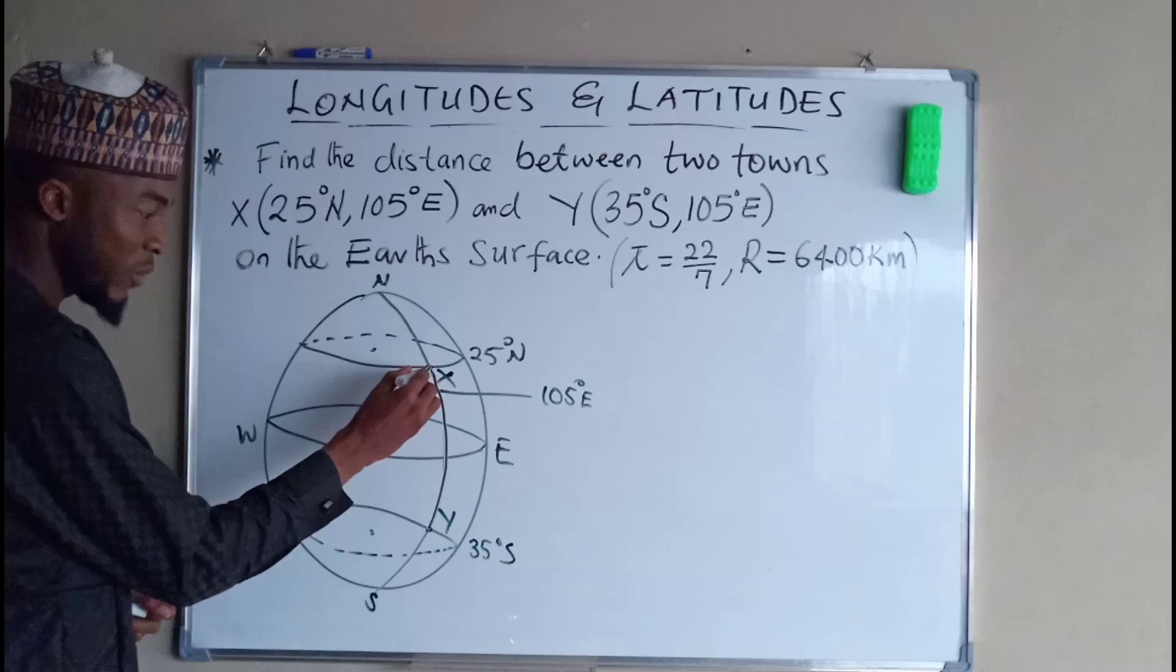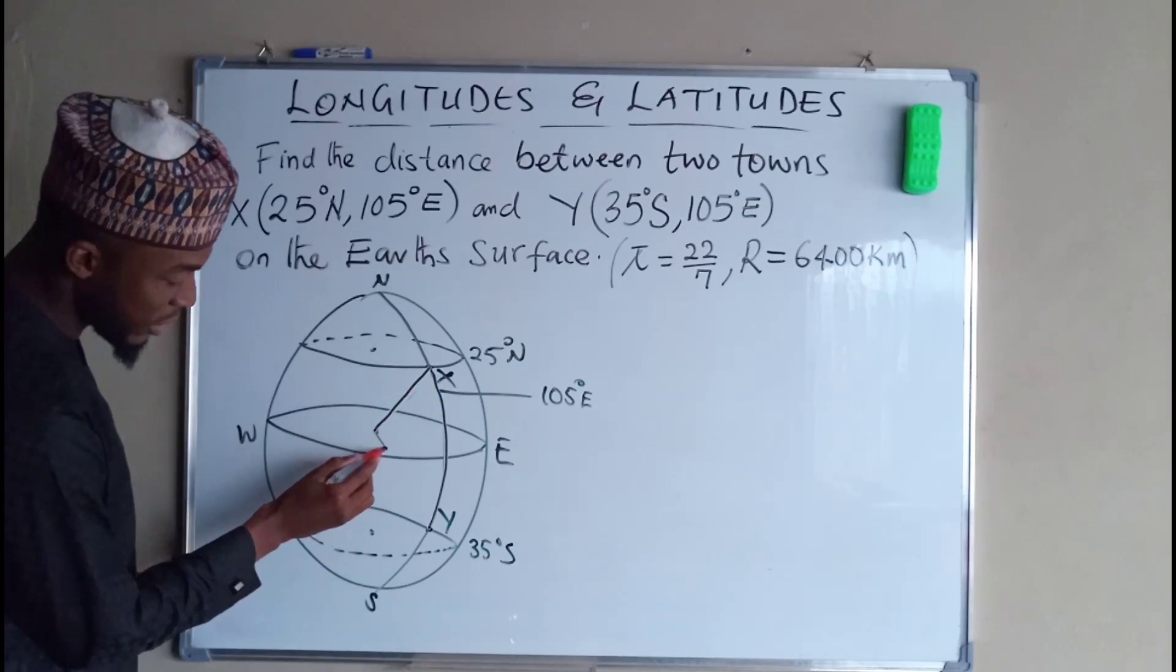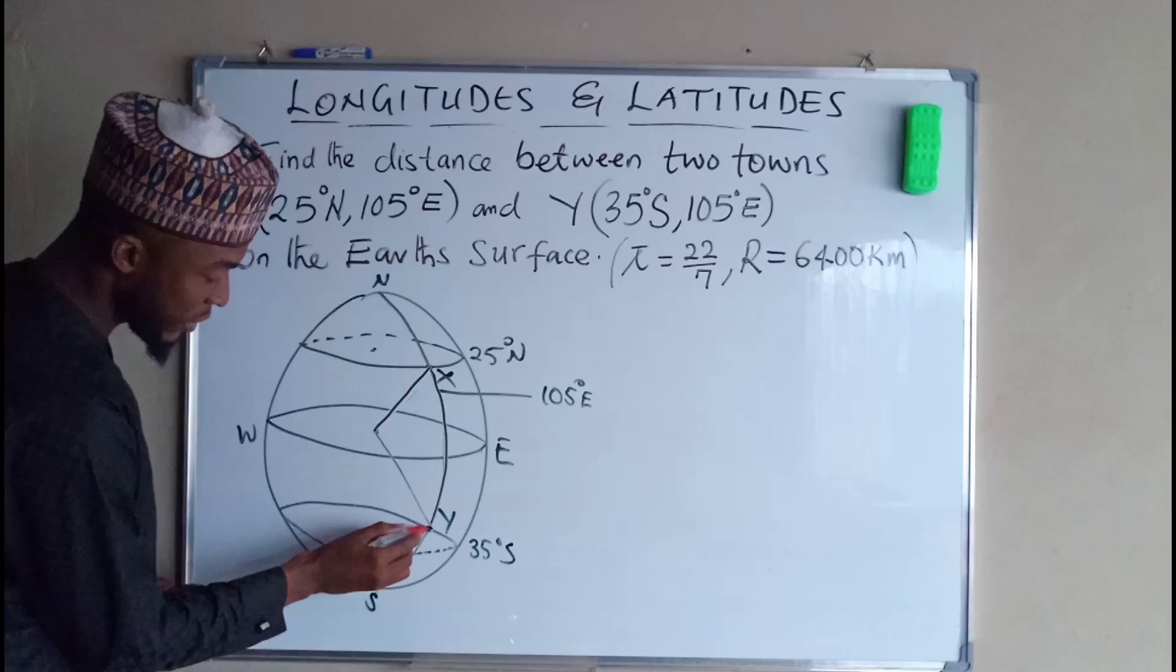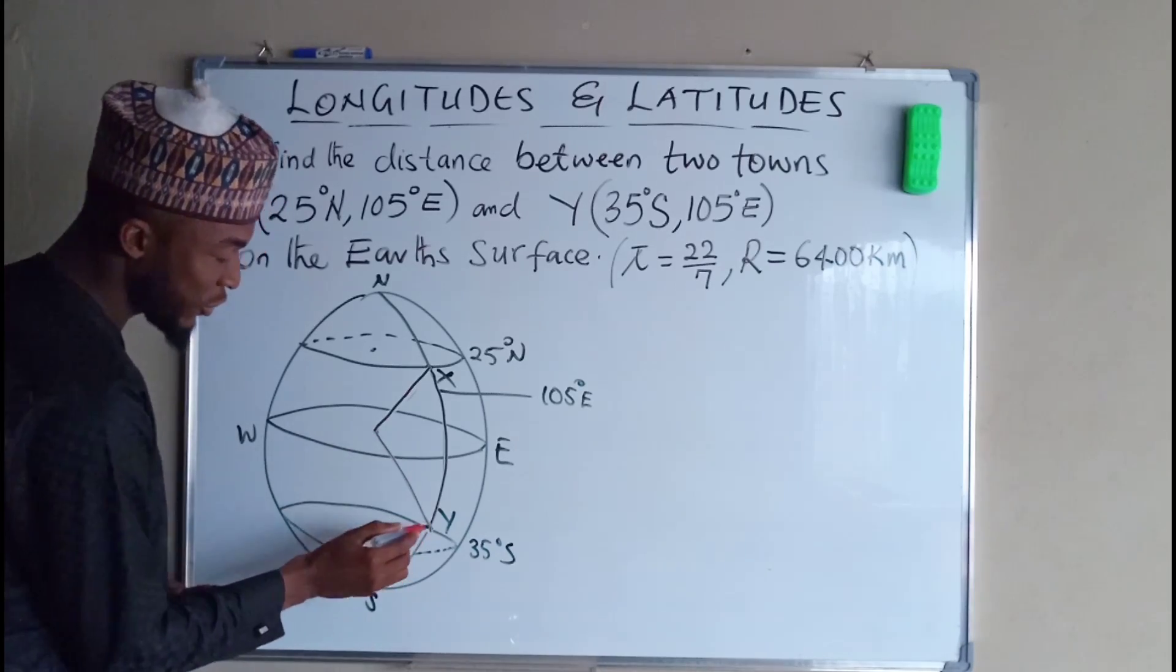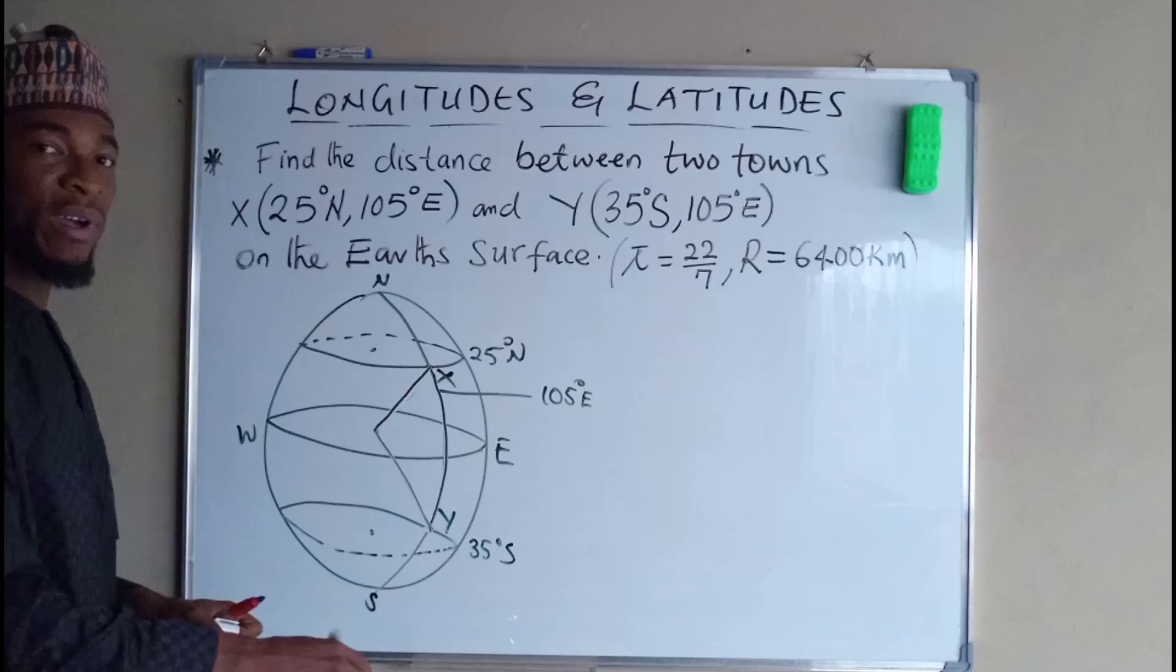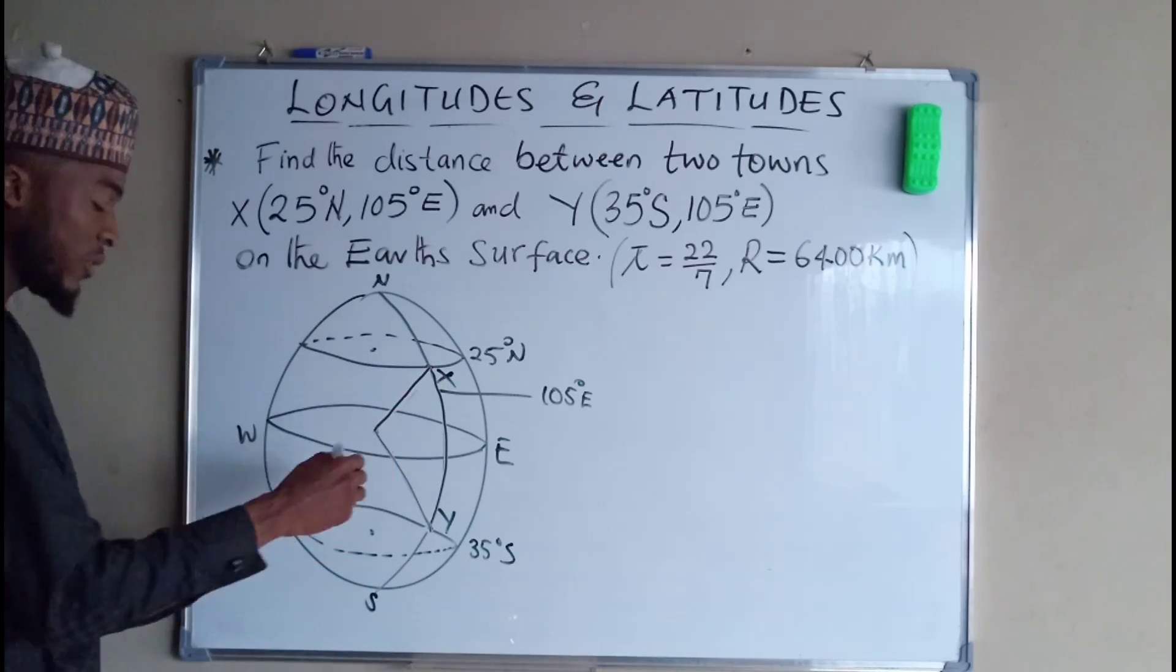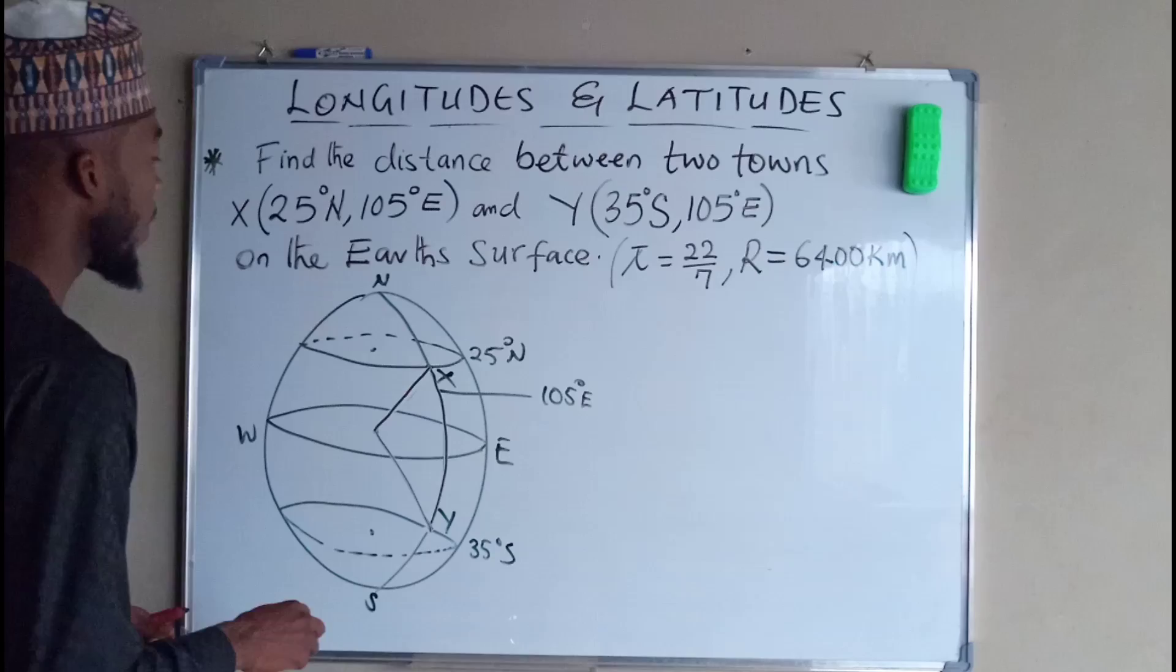So we can have our radius here and another radius here. So this is just a sector. You can use the formula for finding the length of an arc of a circle to determine the distance between X and Y.